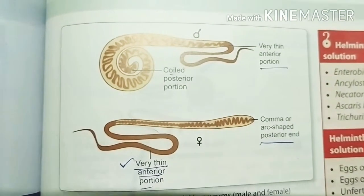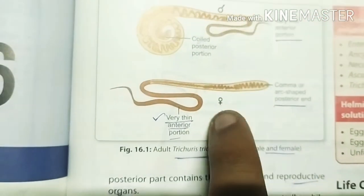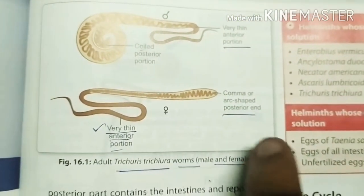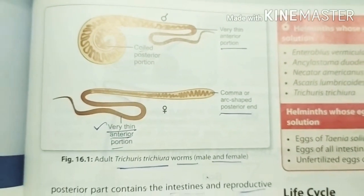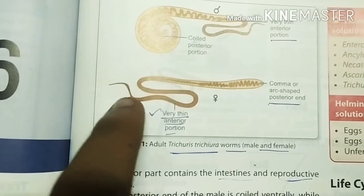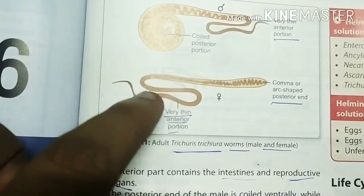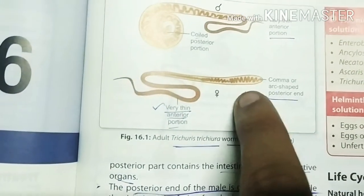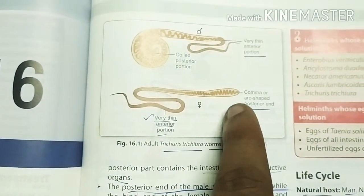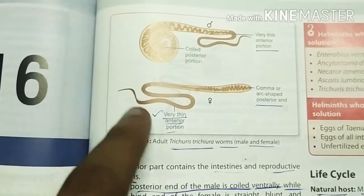You can see, you can focus here on this worm. The posterior end is actually a comma shape — the posterior end is thick. But the anterior end is very thin, just like a whip where you hold it. So the posterior end is very thick and the anterior end is very thin.